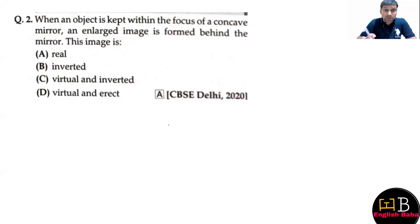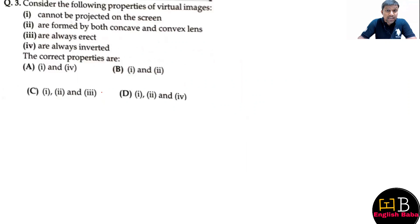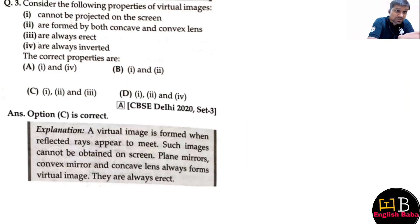The next question is: given object is kept within the focus of a concave mirror to get enlarged image. The correct answer is that image will be virtual and erect. Next question is virtual images, which property is right? The answer is that all the properties except virtual image is inverted. So we have C option.